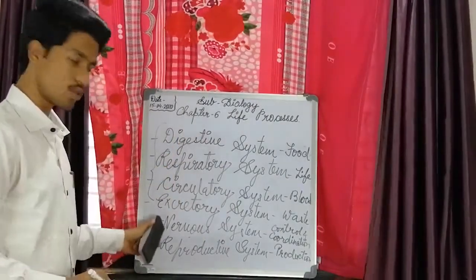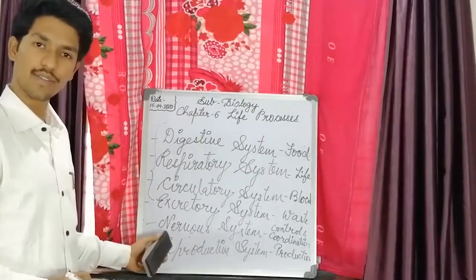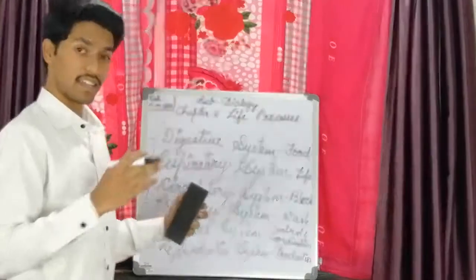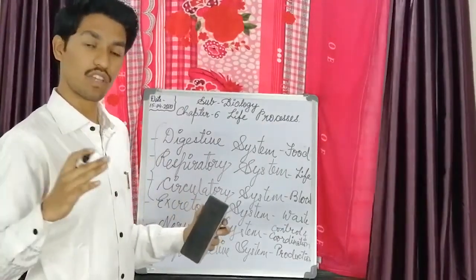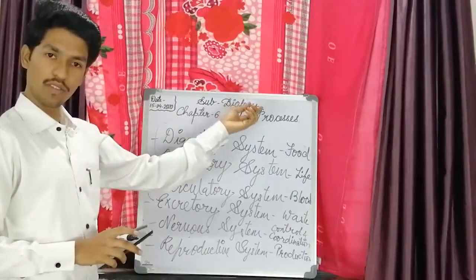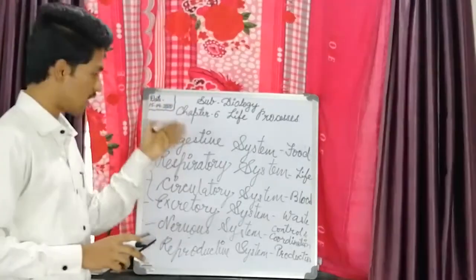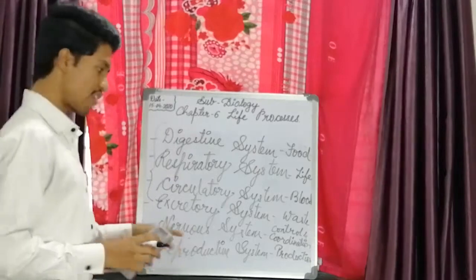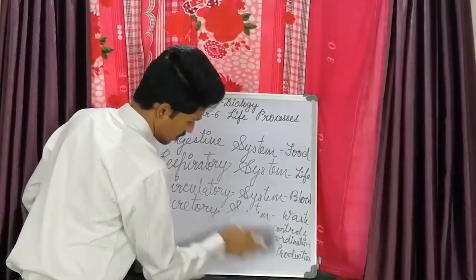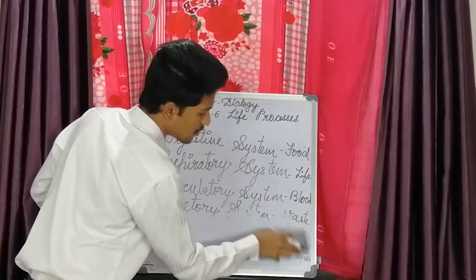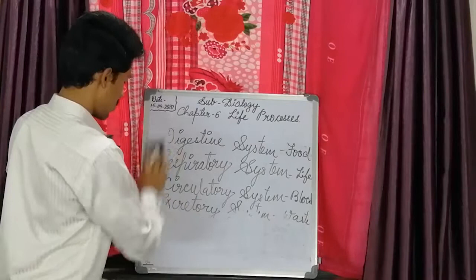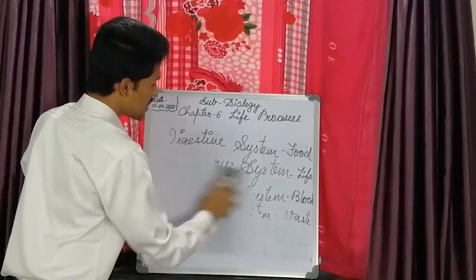Whereas the nervous system and reproductive system — we are going to study these two in detail in the rest of the chapters. But as we know, these are all life processes, so for your understanding I have written all of them. Let's start with the first system, that is the digestive system.